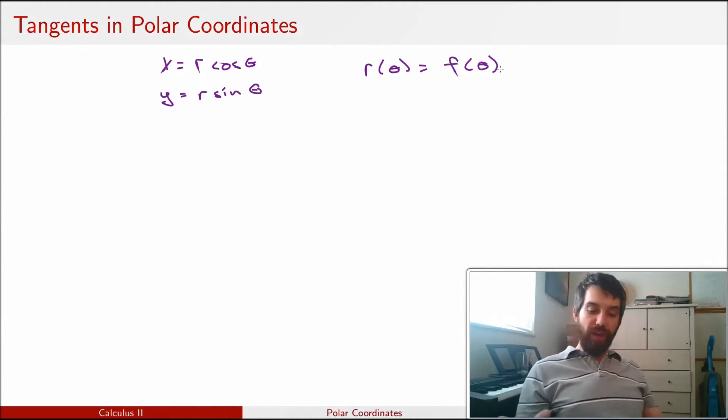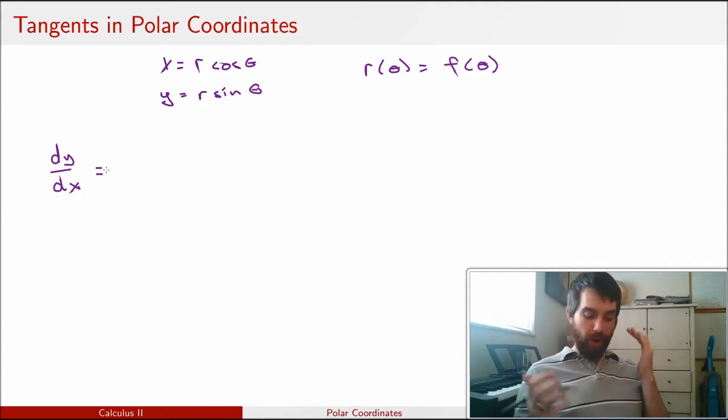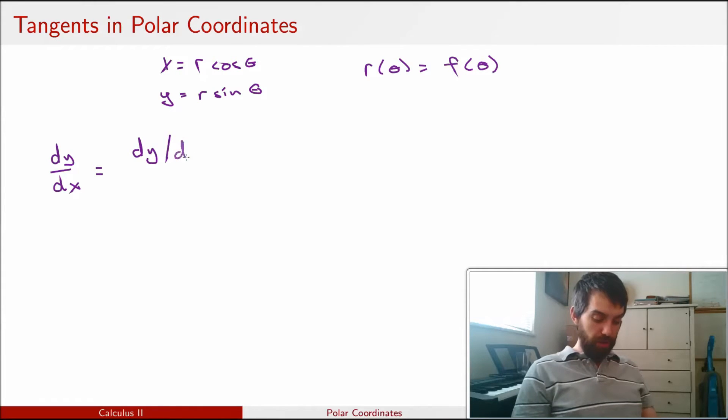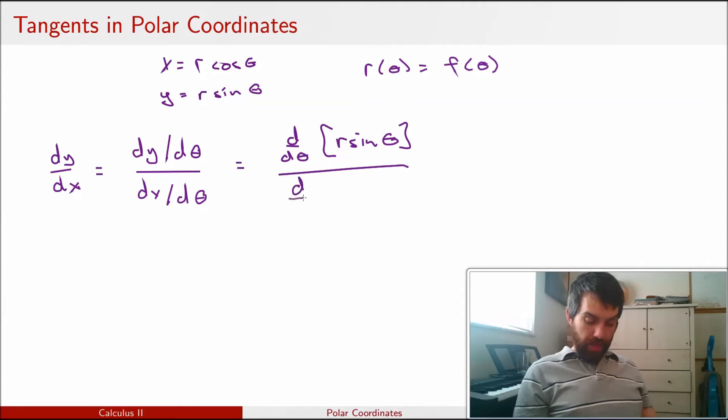So for instance, if I want to deal with tangents, we know that dy/dx, by our analysis of parametric curves, this was going to be the derivative of y with respect to the parameter, so in this case theta, all divided out by the derivative of x with respect to the parameter, in this case theta. And then I know what my y and what my x are going to be, so I'm going to take the derivative with respect to theta of y, which is r sine of theta, and the x is the derivative with respect to theta of r cosine of theta.